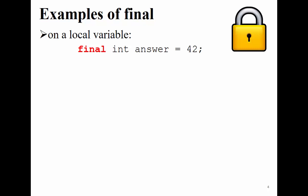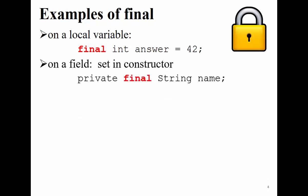For example: `final int answer = 42` with a local variable — that means this is a constant, no one can change it. You can also use it with a field: `private final String name`. Once we set the value for that final field, nobody can change it. We can set the value for final fields using constructors.